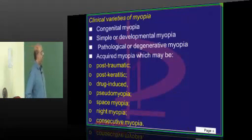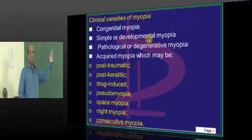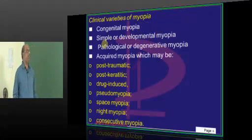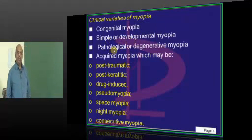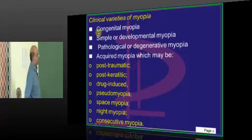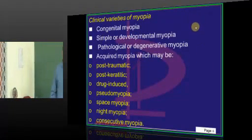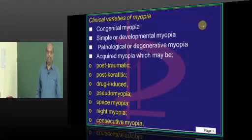The various clinical varieties of myopia are: congenital myopia, simple or developmental myopia, pathological myopia, and acquired myopia — these are the varieties that need to be remembered.